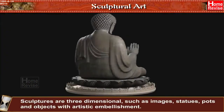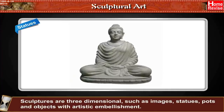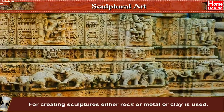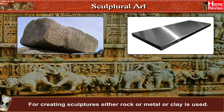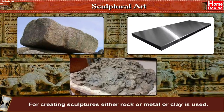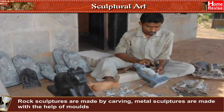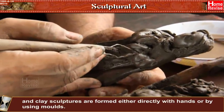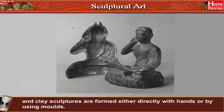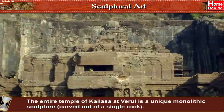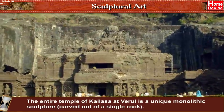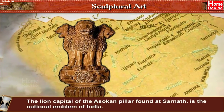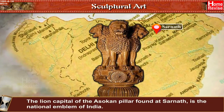Sculptures are three-dimensional works such as images, statues, pots, and objects with artistic embellishment. For creating sculptures, either rock, metal, or clay is used. Rock sculptures are made by carving; metal sculptures are made with the help of molds; and clay sculptures are formed either directly with the hands or by using molds. The entire temple of Kailasa at Verul is a unique monolithic sculpture — carved out of a single rock. The lion capital of the Ashokan pillar found at Sarnath is the national emblem of India.